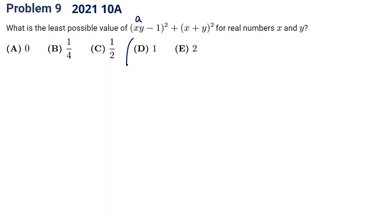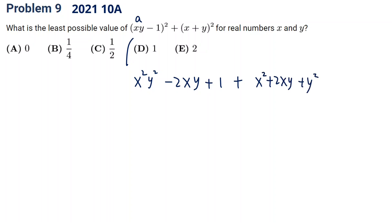Assume this term is a. If we expand it, we get a squared minus 2ab plus b squared, which equals 1. And the next part, if we expand it, is x squared plus 2xy plus y squared. You can see 2xy and 2xy cancel, so this simplifies into x squared plus y squared plus 1.